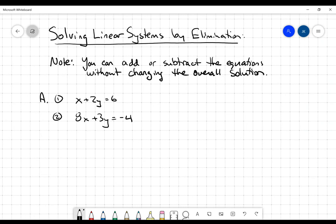The main idea here is that you can add and subtract these equations in this linear system, and it doesn't change the overall solution to the system. So let's take a quick look at an example here. I've got x plus 2y equals 6, and I've got 8x plus 3y is equal to negative 4.